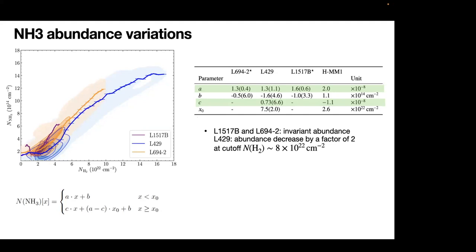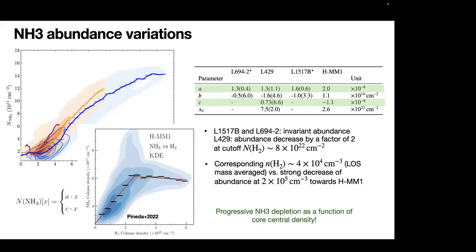This means that we have a moderate depletion of ammonia abundance associated with this most advanced core. We actually had a work published last year on one advanced pre-stellar core, HMM1. In that work, HMM1 showed that there is a more drastic abundance drop of ammonia at the center of this core. We can now compare the cutoff densities where we see this minor drop of abundance of ammonia to this previous work, which shows a more significant decrease. We can see that this means that for the three cores we are probing together with the HMM1 result, we actually resolve a progressive ammonia depletion behavior. This is as a function of core central density and essentially as a function of the core evolutionary stages.